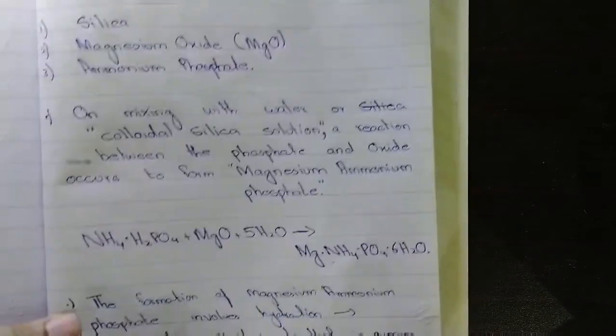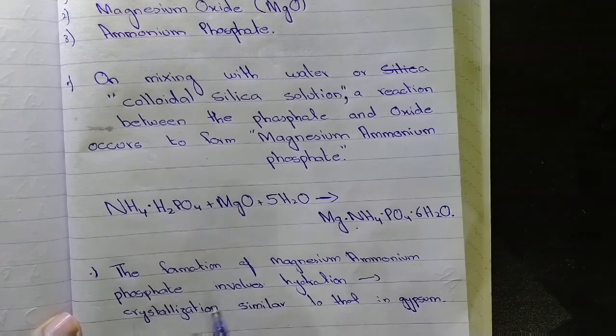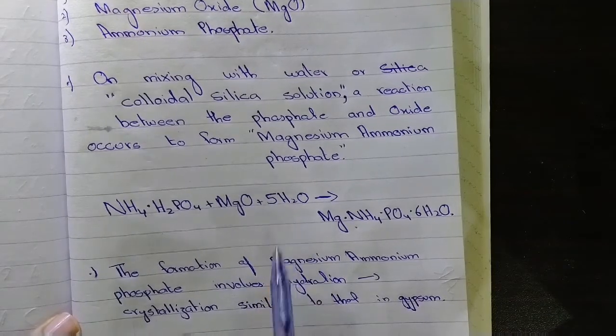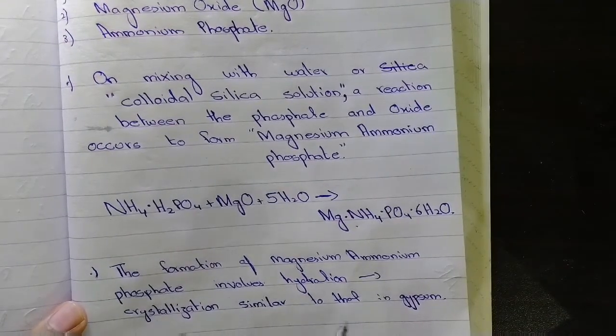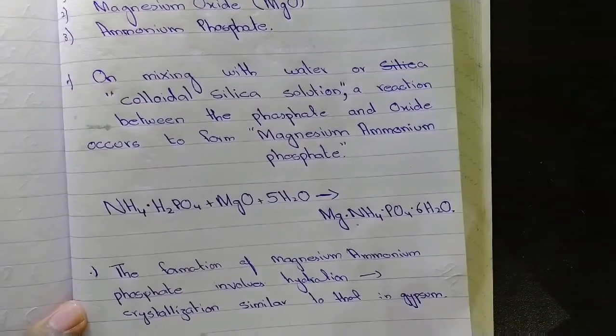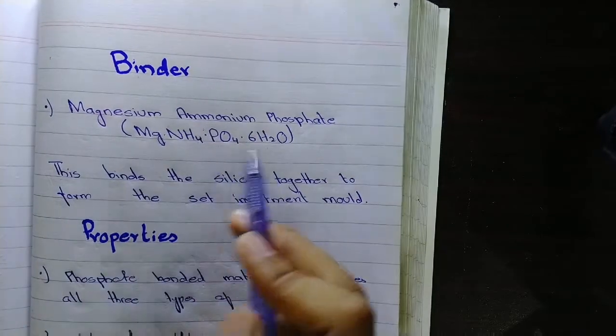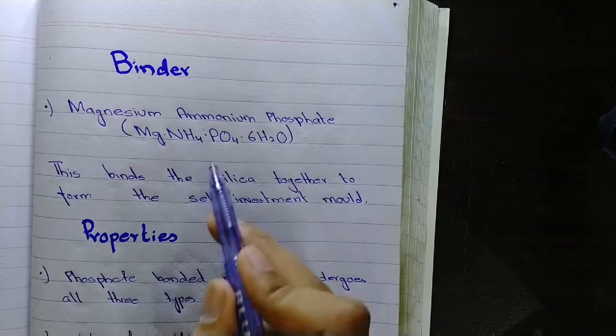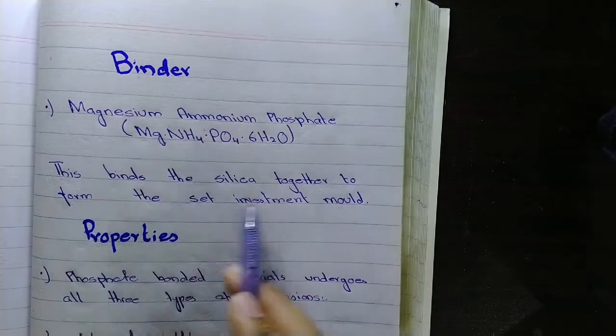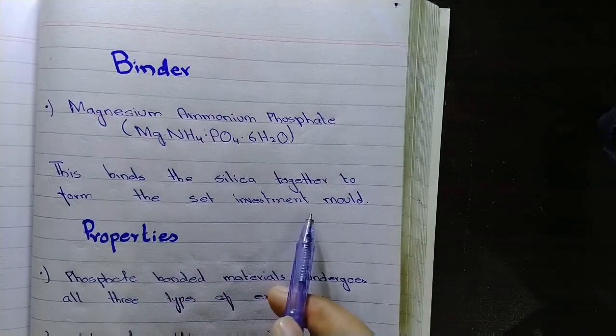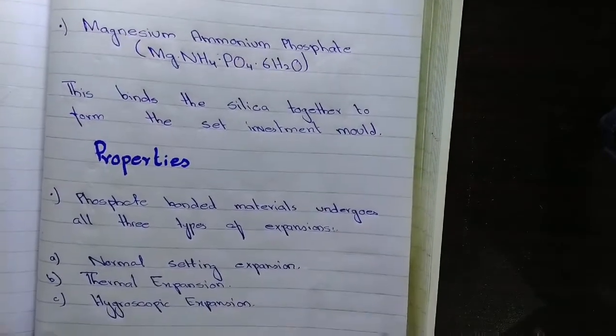The formation of magnesium ammonium phosphate involves hydration followed by crystallization, similar to gypsum. Magnesium ammonium phosphate acts as a binder, binding the silica together to form the set investment mold.